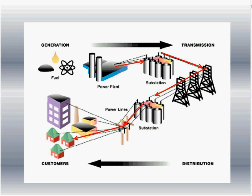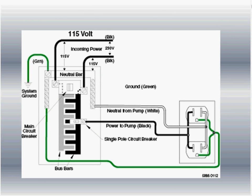Once we get in the house, this is what's going to take place. Coming into our house are two 115-volt lines. If we were to take a voltmeter and put it between those two lines, we would wind up with 230 volts. We take those two 115-volt lines and hook them up to what is called bus bars.